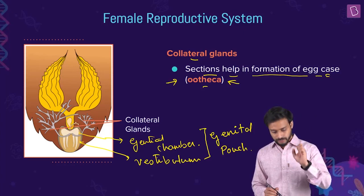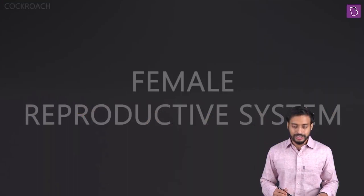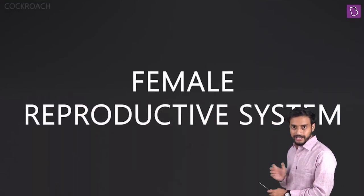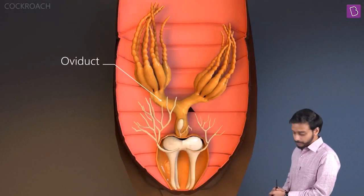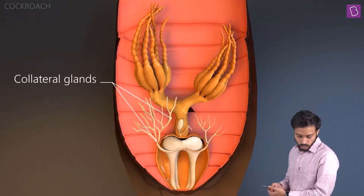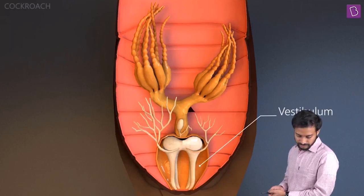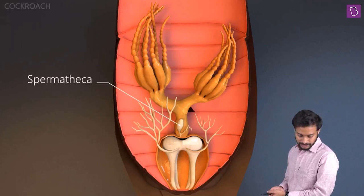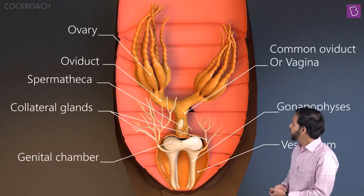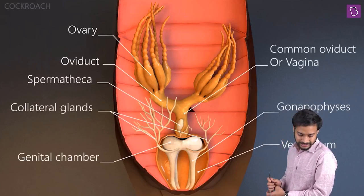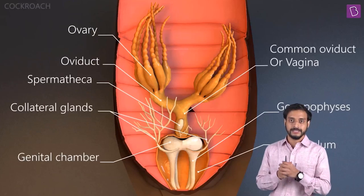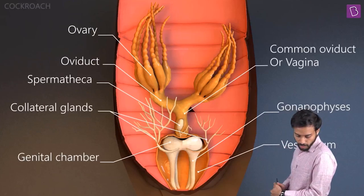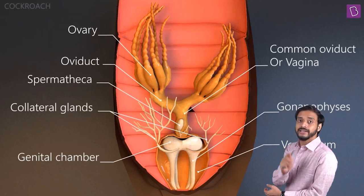Now enjoy the three-dimensional view of the female reproductive system of the cockroach. You can see the oviduct, ovaries, common oviduct/vagina, collateral glands, genital chamber, vestibulum, gonapophysis, and the spermatheca. Take your time to revise all the structures and their functions — if this image gets registered in your memory, you'll never forget the terms and functions.